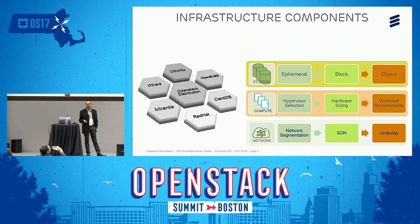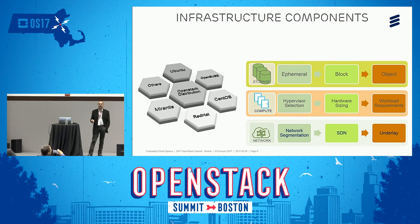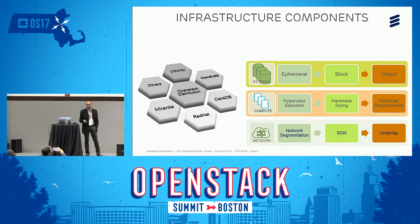For networking, there is network segmentation — deciding on private/tenant networks, provider networks, and storage networks. SDN (software-defined networking) needs to be selected based on workload characteristics, service chaining requirements, or SR-IOV requirements. The underlay — the switching fabric, leaf-spine architecture, and connectivity to the gateway router — also needs to be planned.